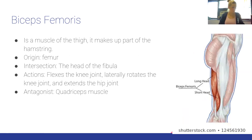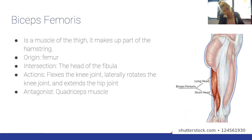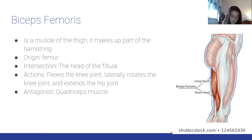The biceps femoris is a thigh muscle making up part of the hamstring. Origin: femur (ischial tuberosity for long head). Insertion: head of the fibula. Actions: flexes the knee joint, laterally rotates the knee, and extends the hip joint. Antagonist: quadriceps muscles — since the hamstrings are on the back of the leg, the antagonist is the front.